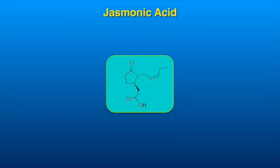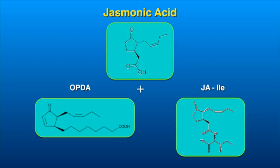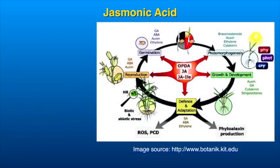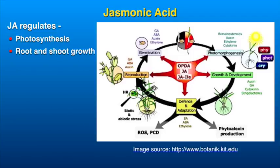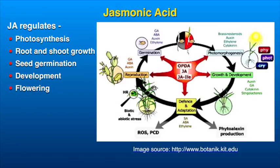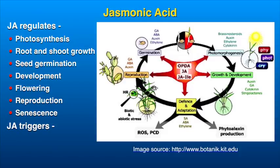Jasmonic acid is a fatty acid derived plant hormone which occurs ubiquitously in plants. Along with its precursor, 12-oxophytodianoic acid (OPDA), and its isoleucine conjugate, JA-isoleucine, JA regulates diverse processes like photosynthesis, root and shoot growth, seed germination, development, flowering, reproduction, and senescence. Moreover, JA triggers the defense responses against biotic or abiotic stress.